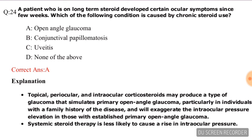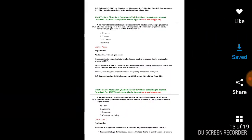Question number twenty-four: A patient on long-term steroids develops certain ocular symptoms. Which condition is caused by chronic steroid use? Options are open angle glaucoma, conjunctival papillomatosis, uveitis, none of the above. The correct answer is open angle glaucoma, option A.